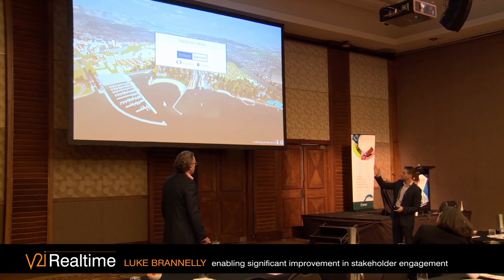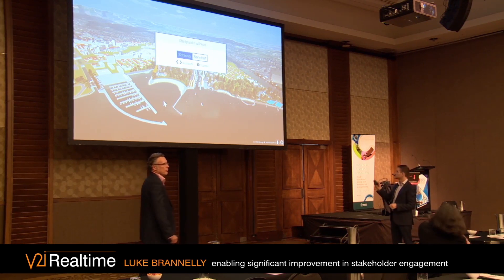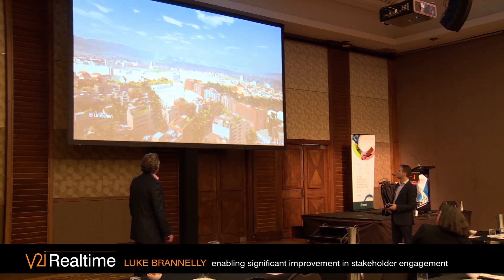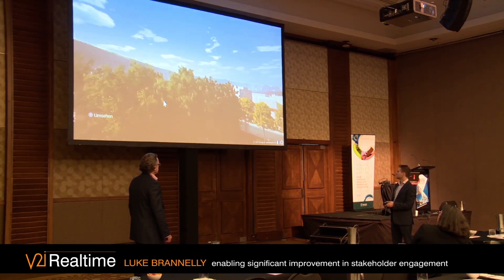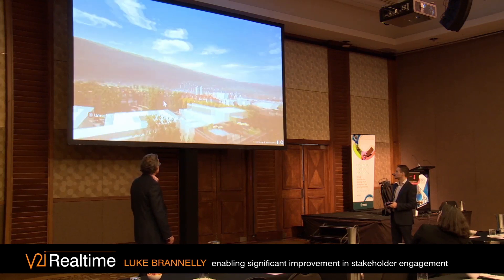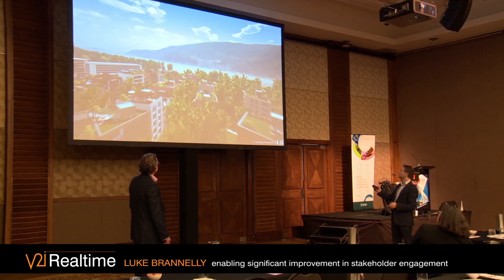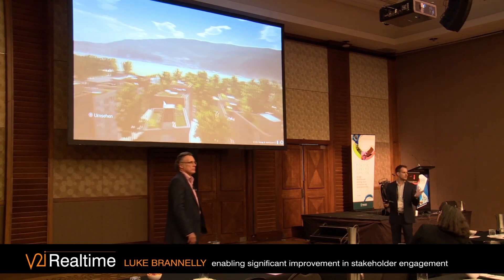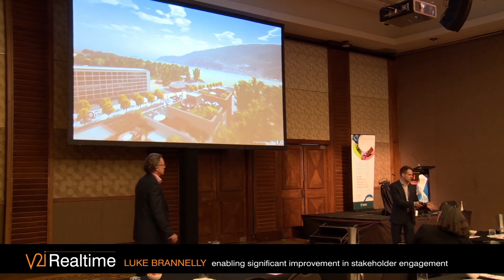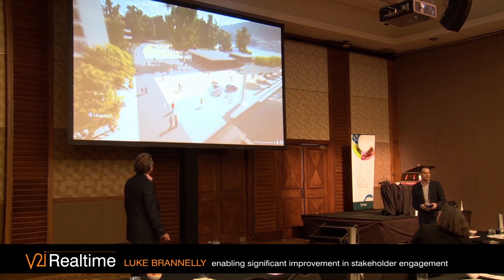Pardon the German, but Schloss means castle and Bahnhof means train station — these are the two locations where this is presented. Starting at the castle, there's a predetermined pathway from this castle that looks somewhat like the one they would be used to. I can use my game controller to look around and get an impression of the area. This serves as a point of recognition — we're currently here — and now let's fly to this starting point.